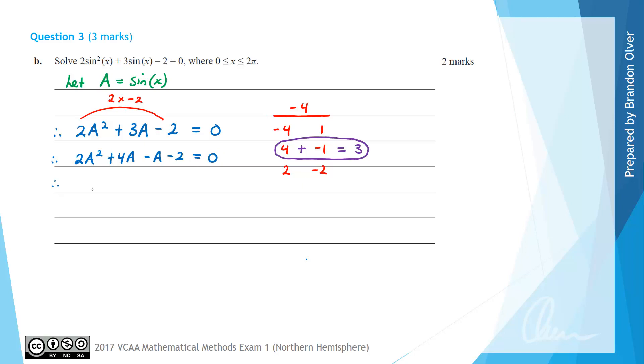And then we factorize by grouping 2 and 2. So 2A² + 4A has a common factor of 2A, leaving behind A + 2. And then -A - 2 has a highest common factor of -1, and that will also leave behind A + 2, and that's going to equal 0. So removing now the highest common factor of A + 2, which is present in both of our terms, we would find the factorized expression is (A + 2), and then in the second bracket we'd have (2A - 1), and we know that equals 0.